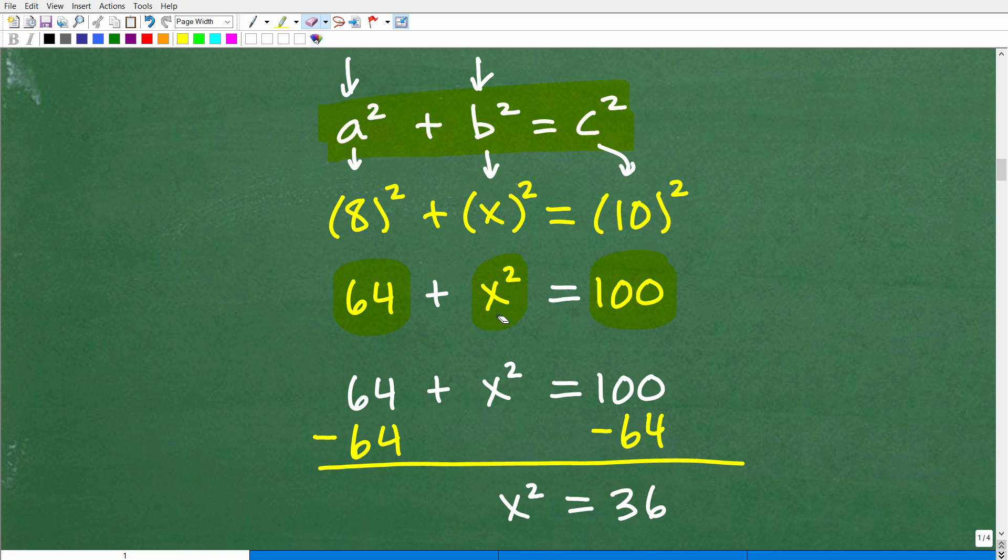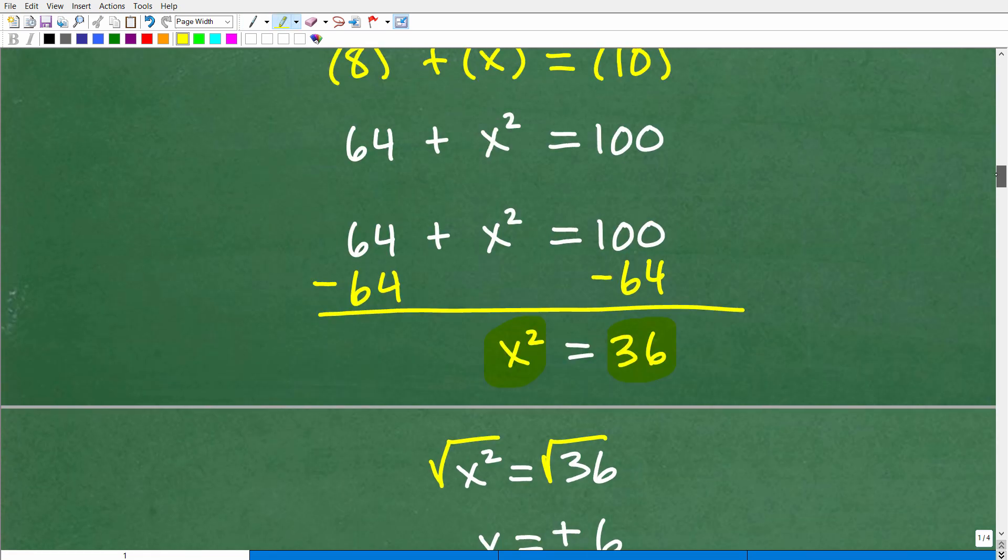So now I need to go ahead and solve this basic quadratic equation. What we want to do here is get the x² on one side of the equation so I can subtract 64 from both sides of the equation, and I'm left with x² = 36. So if you don't understand this right here,